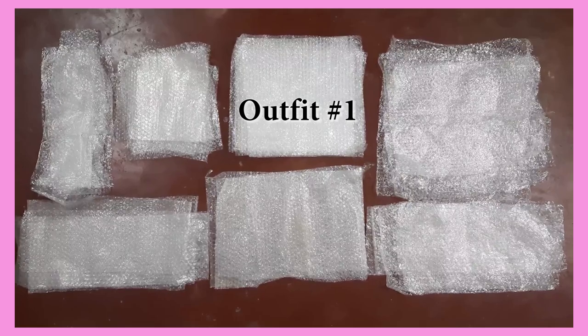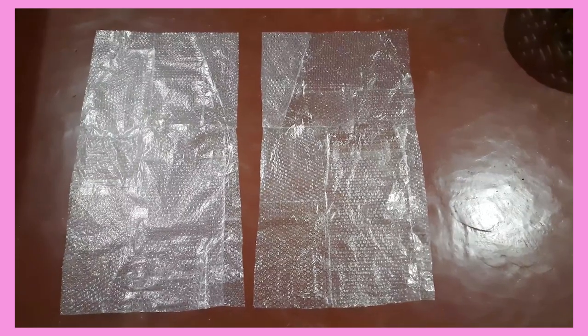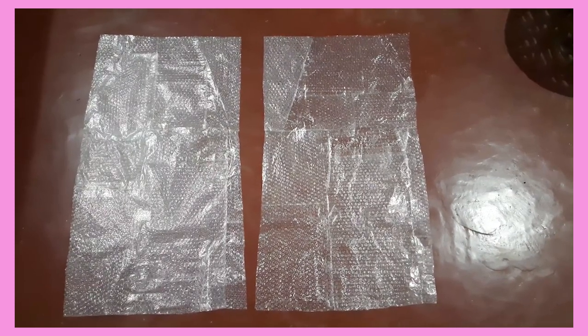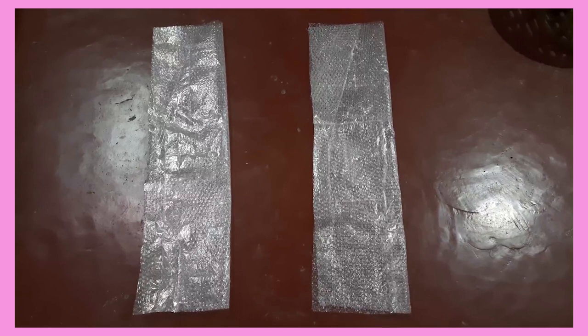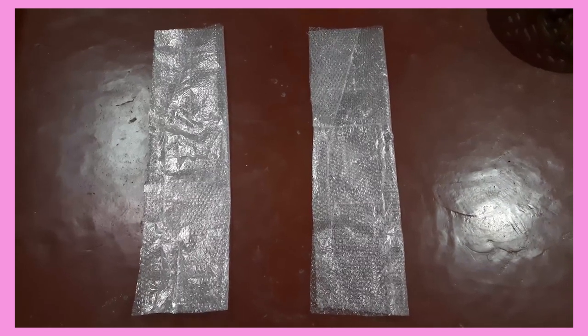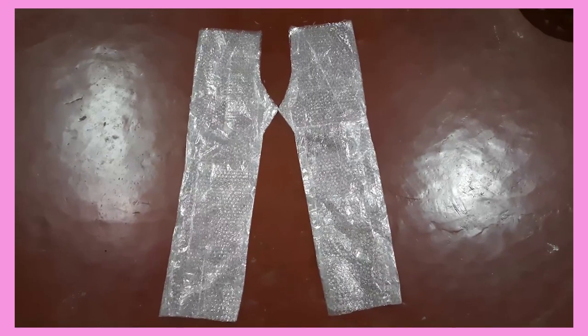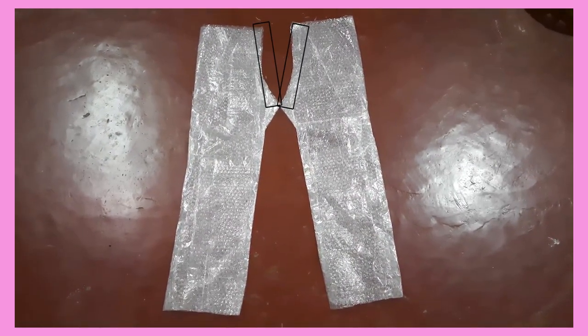For the first outfit, we shall start with the pants. We tape a few pieces of the bubble wrap together to make these two rectangular sheets. These will be the legs of the pants. Now we will fold both of them in half and cut them in this shape. Next, we will tape these two sides and then join them at this point so that we can tape these parts together.